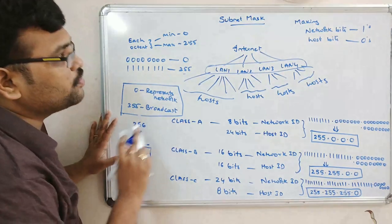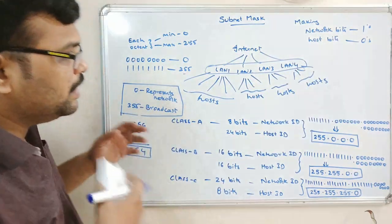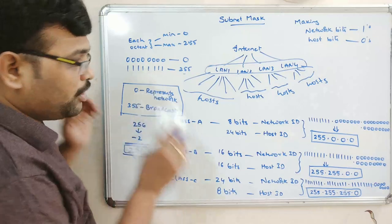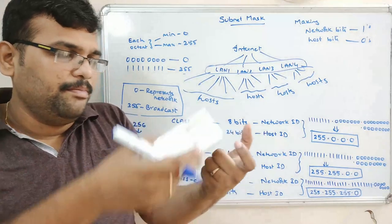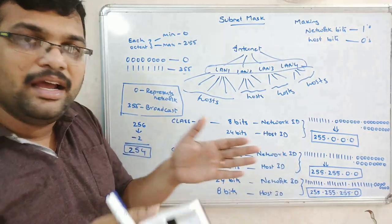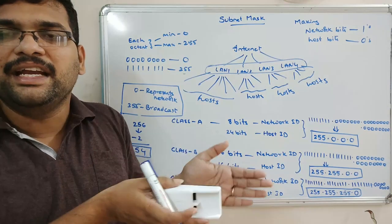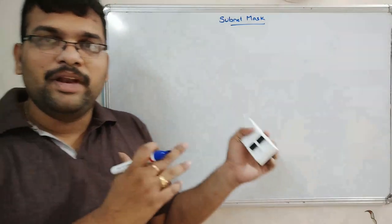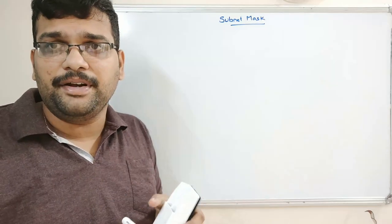To get the network ID, consider the IP address, determine which class it belongs to, apply the subnet mask, and perform the AND operation between the given IP address and the subnet mask. This gives the network ID. Let us explain with an example.